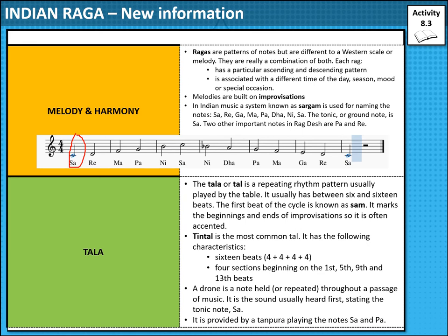Moving on to the tala. The tala is a repeating rhythm usually played by the tabla, which is the collection of percussion instruments. It usually has between six and sixteen beats, and the first beat of the cycle is known as the sam. It marks the beginning and end of improvisations, so it's often accented. The tin tala is the most common tala — a rhythmic pattern — and it has the following characteristics: 16 beats made up of four plus four plus four plus four, with four sections beginning on the first, fifth, ninth and thirteenth beats. A drone is a note that's held, often used in Indian raga — either repeated or a consistent note throughout a passage of music, often using the tonic, the sa.